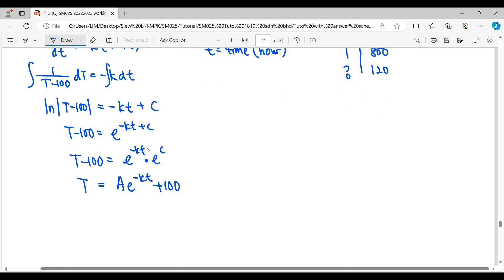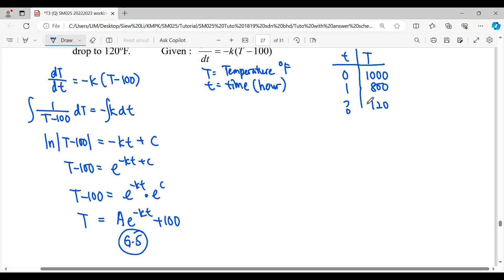This is our general solution, temperature in terms of time. In order to answer the question, we have to find out our particular solution. In finding particular solution, we will substitute the quantities. Here we have two constants to be found, which is constant A and constant K. The first initial value when time is 0, temperature is 1000. When we move this 100 back to the left-hand side, it will give us 900. E to the power of 0 is 1, so A is 900.